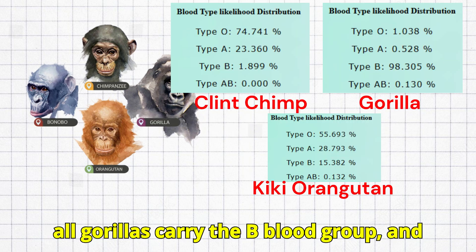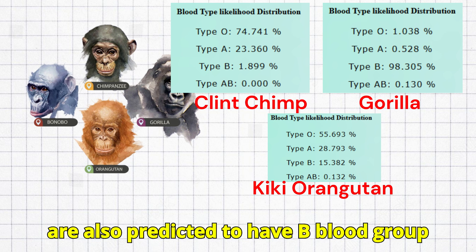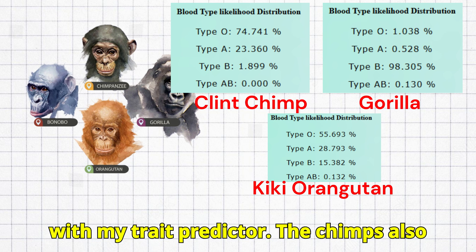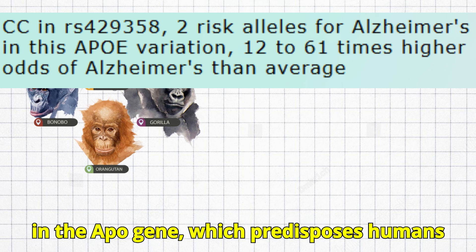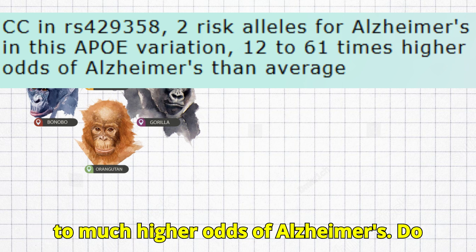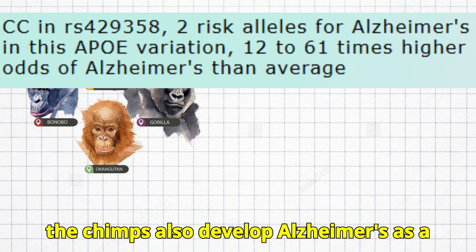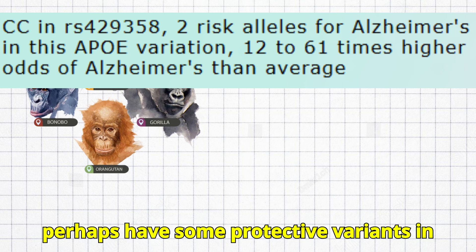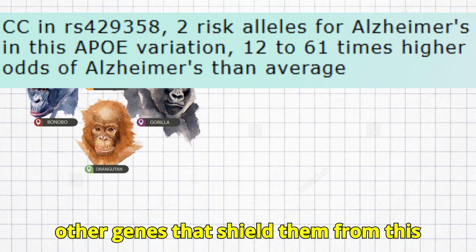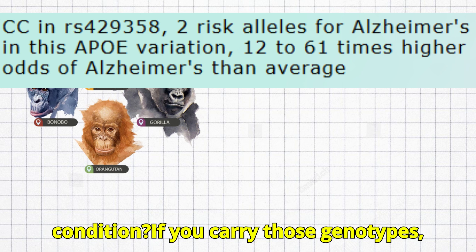Regarding blood types, all gorillas carry the B blood group, and are also predicted to have the B blood group with the trait predictor. The chimps also carry risk variants for Alzheimer's in the APOE gene, which predisposes humans to much higher odds of Alzheimer's. Do the chimps also develop Alzheimer's as a consequence of this genotype, or do they perhaps have some protective variants in other genes that shield them from this condition?